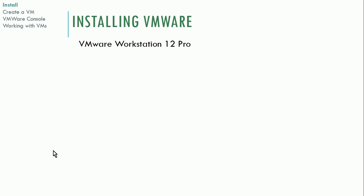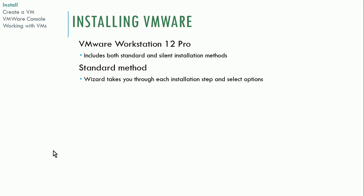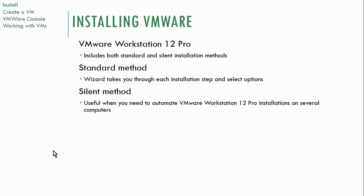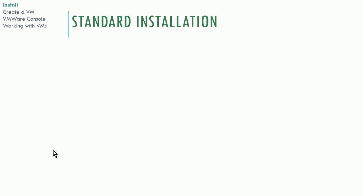To install VMware Workstation 12, there are both a standard and silent installation method. The standard method is a wizard, just like most applications you install in Windows or Mac — you click some buttons and it gets installed. There's also a silent method, which is useful if you need to install VMware on multiple computers. We're not going to cover the silent method in this course, but it's good to know it's an available option.